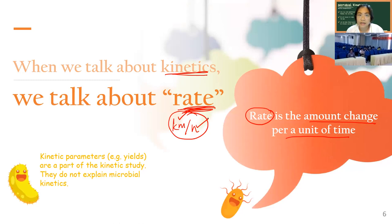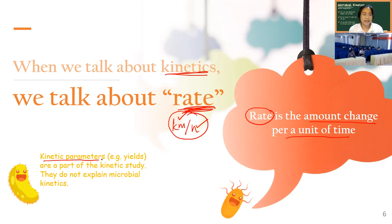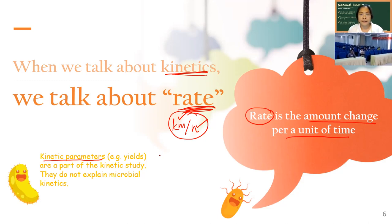When we are talking about cell kinetics, we are talking about the changes in those three things: biomass, how they change; substrate, how they change; and the product, how they change. Kinetic parameters like the calculation of yields, productivities, and those types of things are just a part of a kinetic study, because kinetics is about understanding how the cells change and trying to use mathematical models to understand.